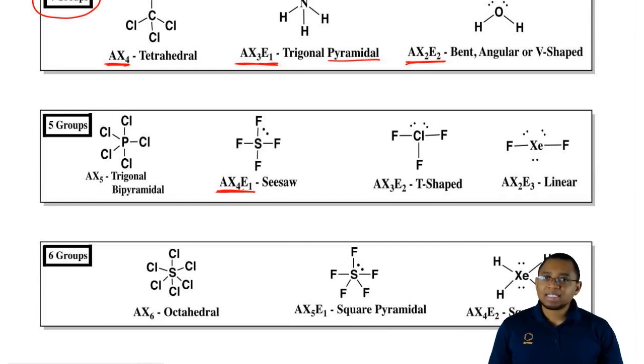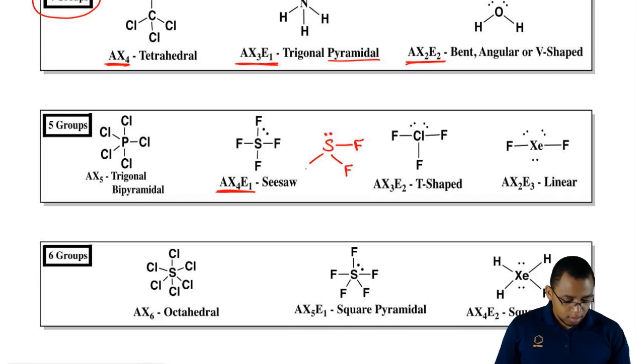AX4E1 would be seen as seesaw. Another way we could have drawn this is we could have drawn a seesaw like this. You may see it like that as well. AX3E2 is T-shaped and you can see that this looks like a T. That's why they call it T-shaped.